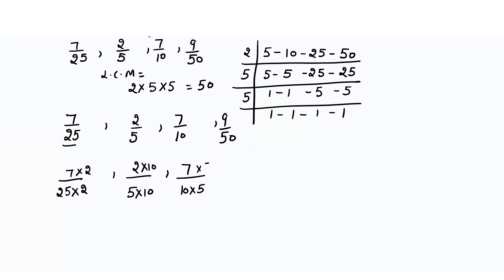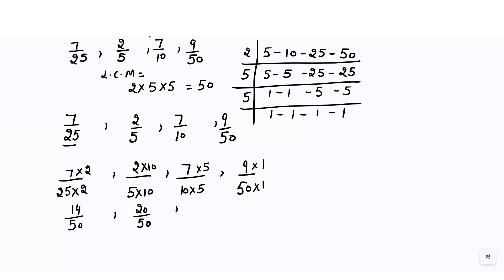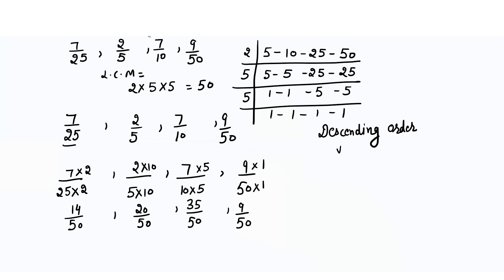Since 9/50 is already over 50, we can multiply by 1 or keep it as is. The converted fractions are 14/50, 20/50, 35/50, and 9/50. We need to arrange these in descending order, meaning largest to smallest.